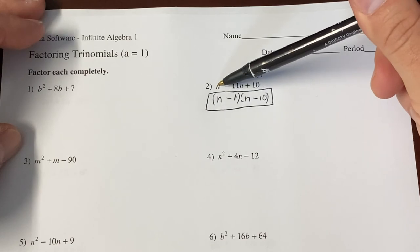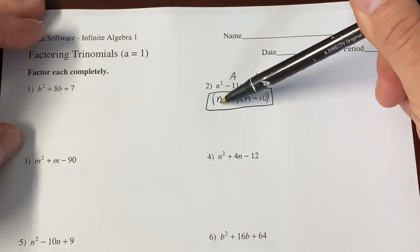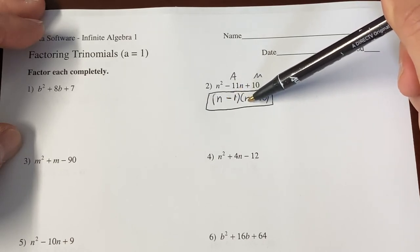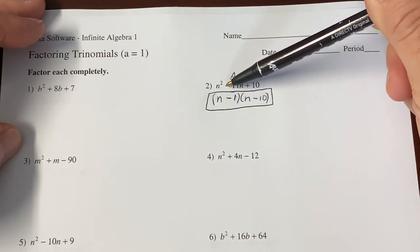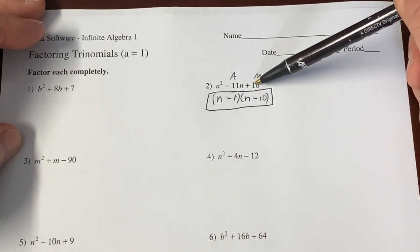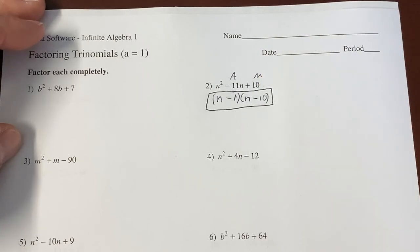n times n is n squared, right? Firsts, n times n, n squared. Outers, negative 10n. Inners, negative n. Those will combine to give me negative 11n. And then when you do your lasts, negative 1, negative 10, you will get positive 10. So now we've checked it. We know it's correct.